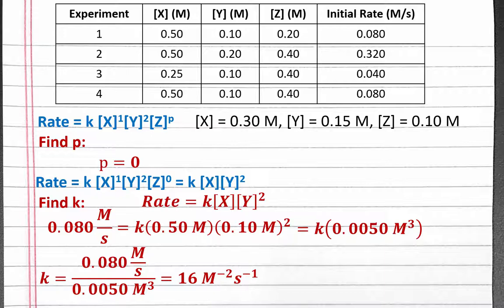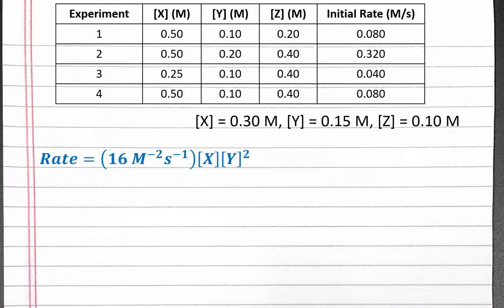We can substitute this value of k into our complete rate equation. To double-check that we solved the problem correctly, we should be able to plug in data from any of the rows for an experiment and come out with the measured initial rate for that experiment. Our last step is to plug in the initial concentrations given in the problem to predict the initial rate under different conditions. Since our rate only depends on the concentrations of X and Y, the concentration of Z is ignored.